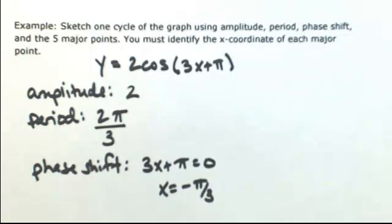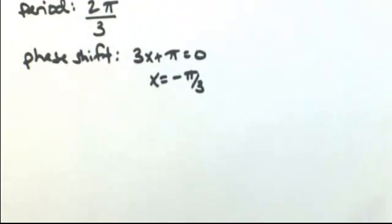Now I want to find the x-coordinates that are going to extend from negative pi over 3 into the end of the first cycle, which is going to be a length of 2 pi over 3. So let me start by drawing my x-axis.